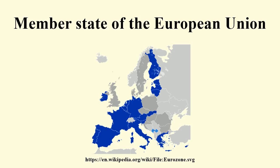On 1 July 2013, Croatia became the newest member state of the EU. In order to accede, a state must fulfill the economic and political requirements known as the Copenhagen criteria, which require a candidate to have a democratic, free-market government together with the corresponding freedoms and institutions and respect for the rule of law. Enlargement of the Union is also contingent upon the consent of all existing members and the candidates' adoption of the existing body of EU law, known as the Acquis Communautaire.